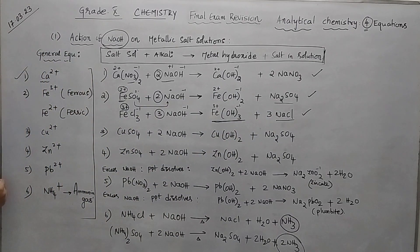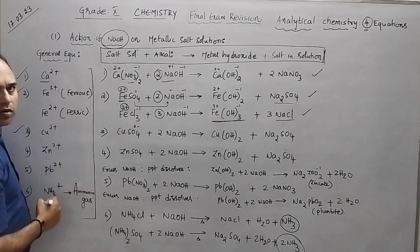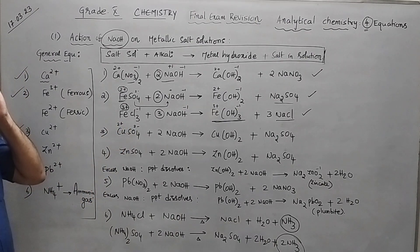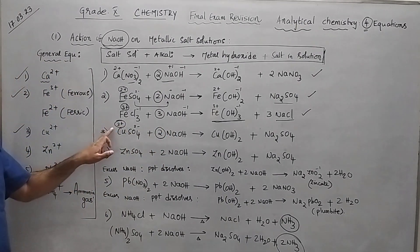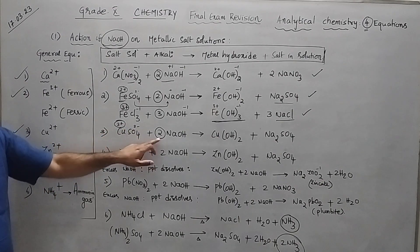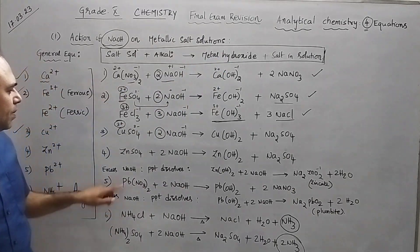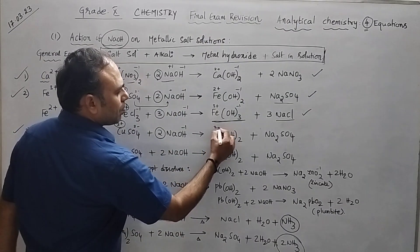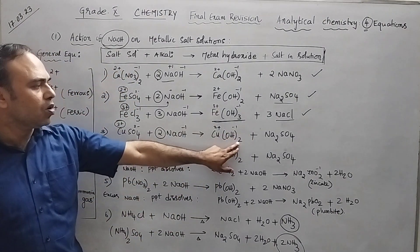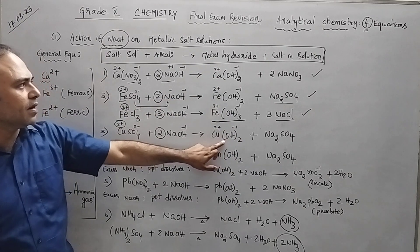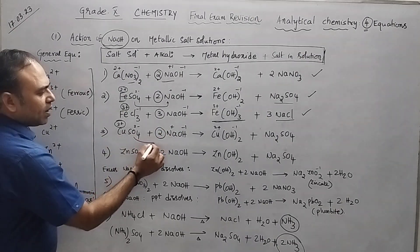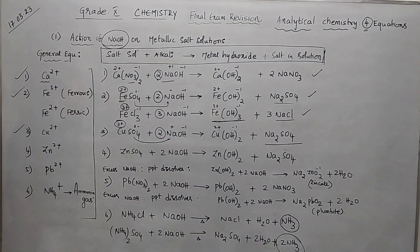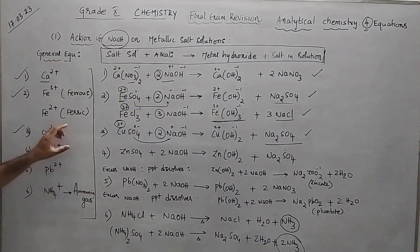We have completed calcium and iron. Now move to the third one — copper. Take CuSO₄; SO₄²⁻ and Cu²⁺. You can identify the coefficient yourself: it will definitely be 2, because the positive charge is +2. Your metal hydroxide is Cu(OH)₂. The leftover ions Na⁺ and SO₄²⁻ give Na₂SO₄ (sodium sulfate). Very simple method.